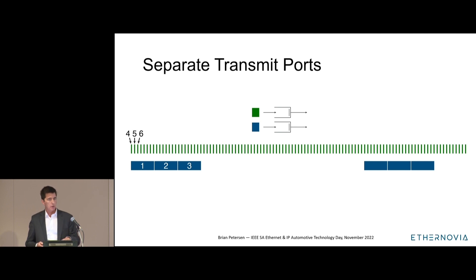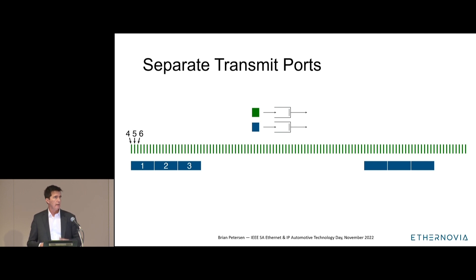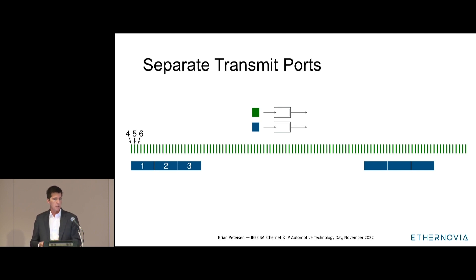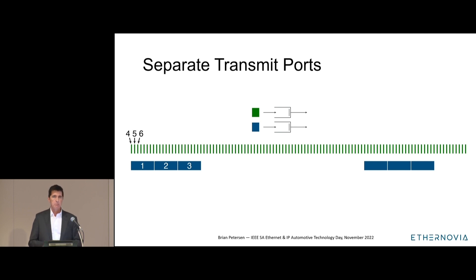To illustrate how this works, consider two sources of traffic — green and blue — each wanting to emit data at 30% of their link's bandwidth. The green source transmits small packets frequently; the blue source transmits multi-packet messages infrequently. In this simple scenario, each traffic source has its own output queue and transmit port, so there's no conflict. The packets are delivered with essentially zero delay, representing 30% of available bandwidth each.